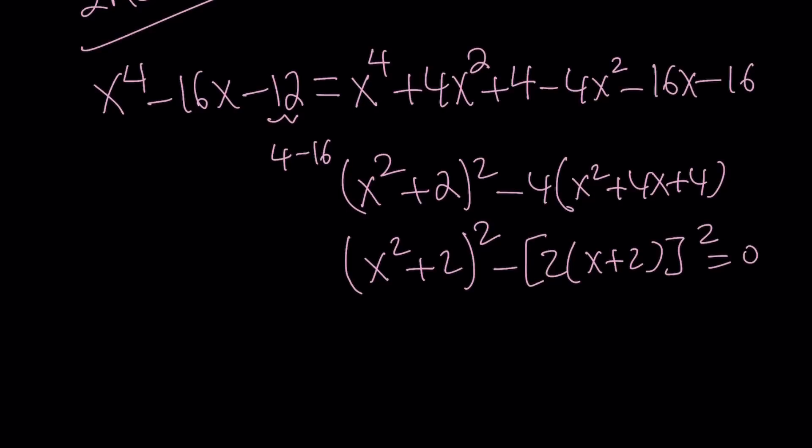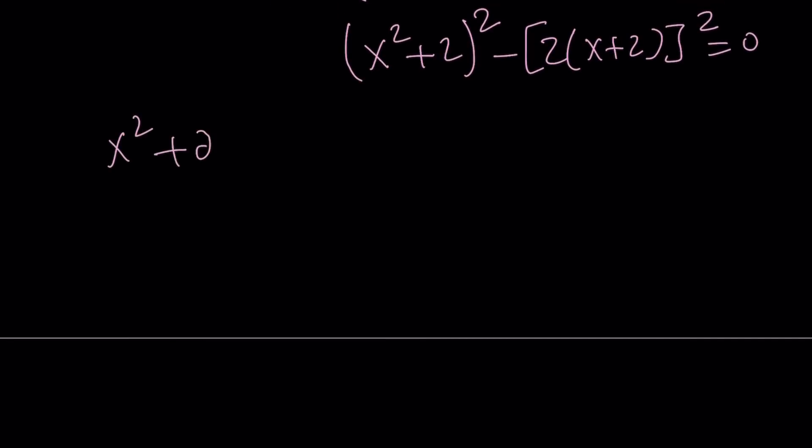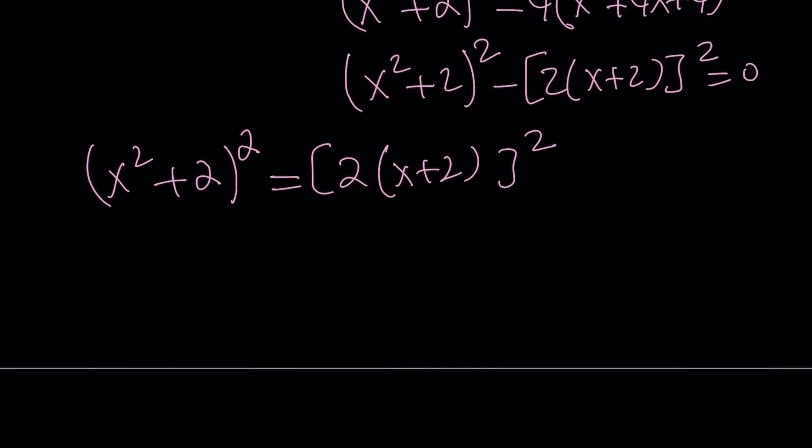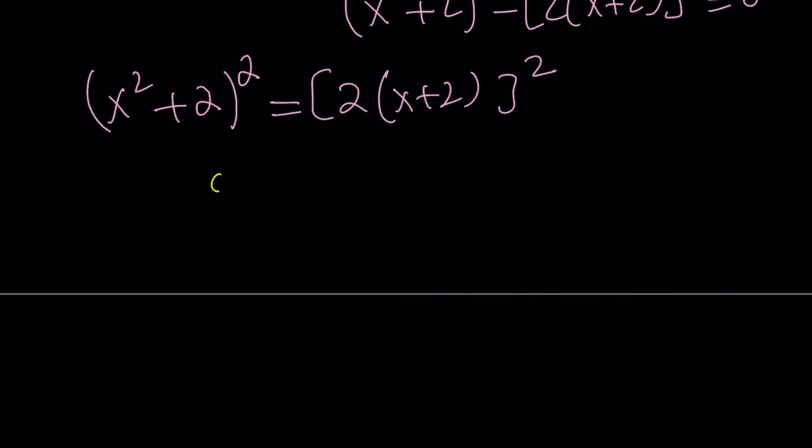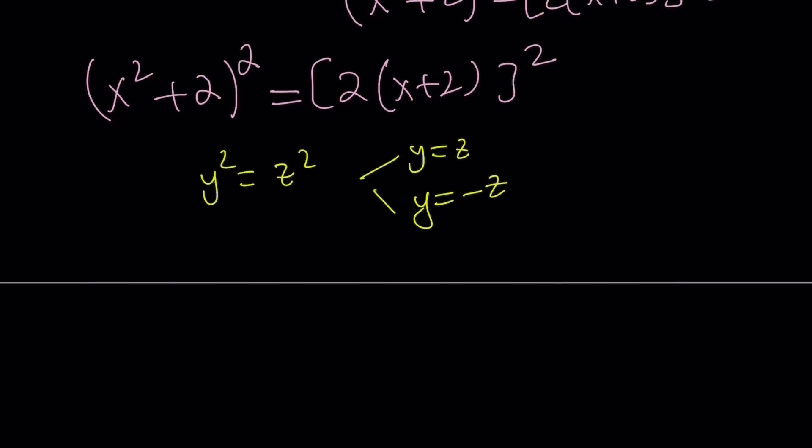Now, remember, we were setting this equal to 0. That just means that we have squares on both sides. I have x squared plus 2 squared equals 2 times x plus 2 squared. So from here, we can write two solutions, because if y squared equals z squared, this implies either y is equal to z, or y is equal to negative z. So this gives us x squared plus 2 is equal to 2x plus 4. And from here, we get x squared minus 2x minus 2 equals 0.